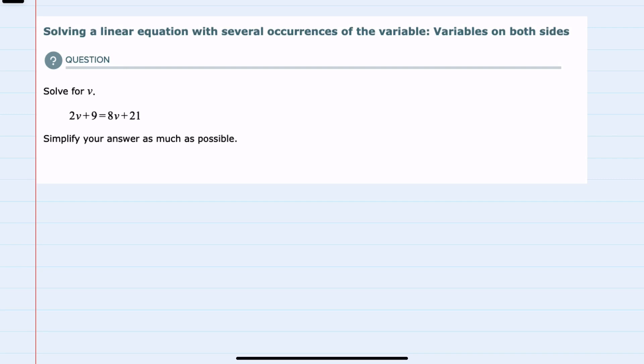In this video, I'll be helping you with the problem type called solving a linear equation with several occurrences of the variable, variables on both sides. We're asked to solve for V in this equation, and as we can see in the description of this problem type, we do have the variable on both sides.